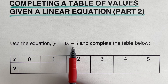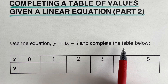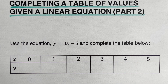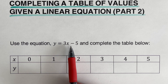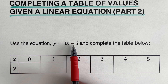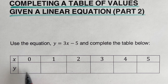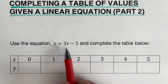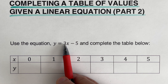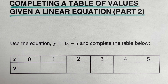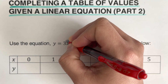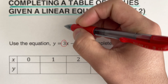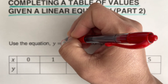Let's take this first example: use the equation y equals 3x minus 5 and complete the table below. There are two numbers in this equation — 3 and negative 5 — and these are very important for completing the table. This first value, the coefficient of x, is what we call the growth factor or the slope. So this 3 is the growth factor or the slope.